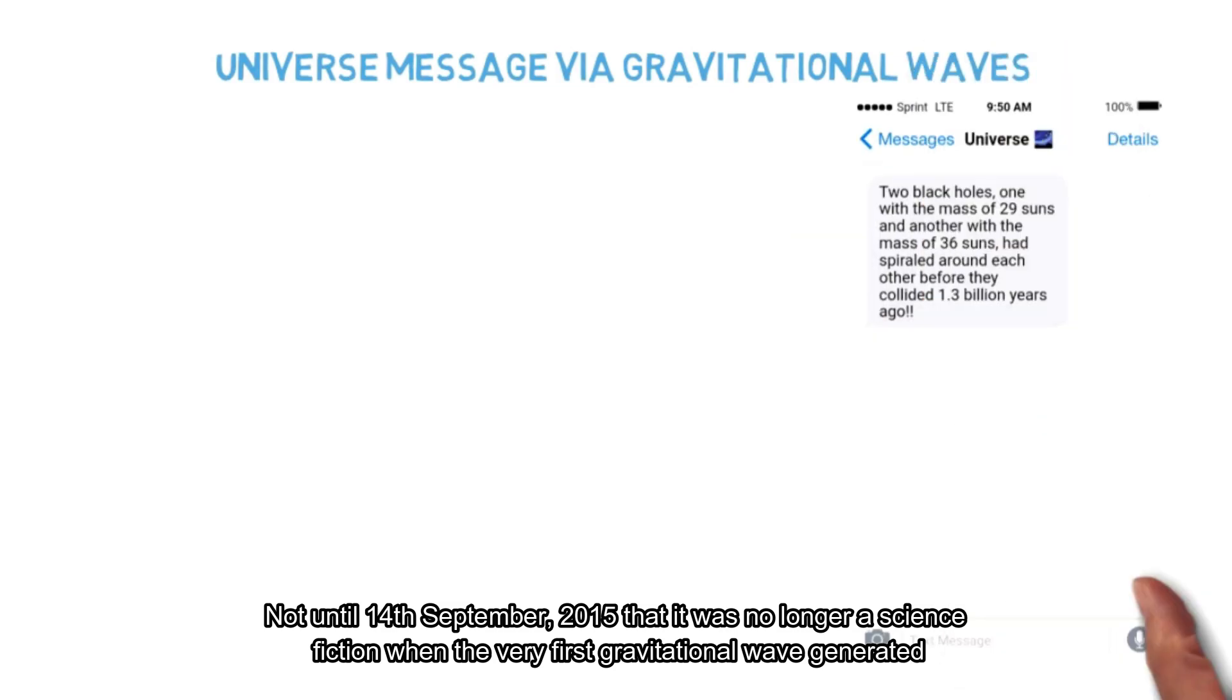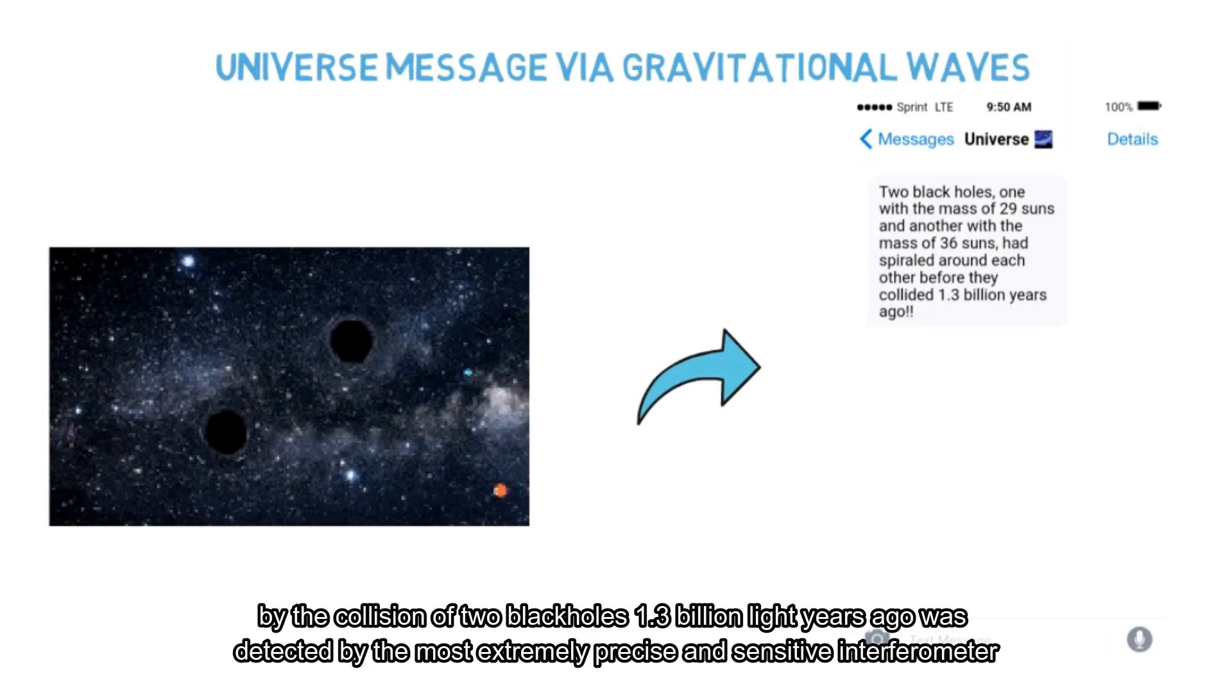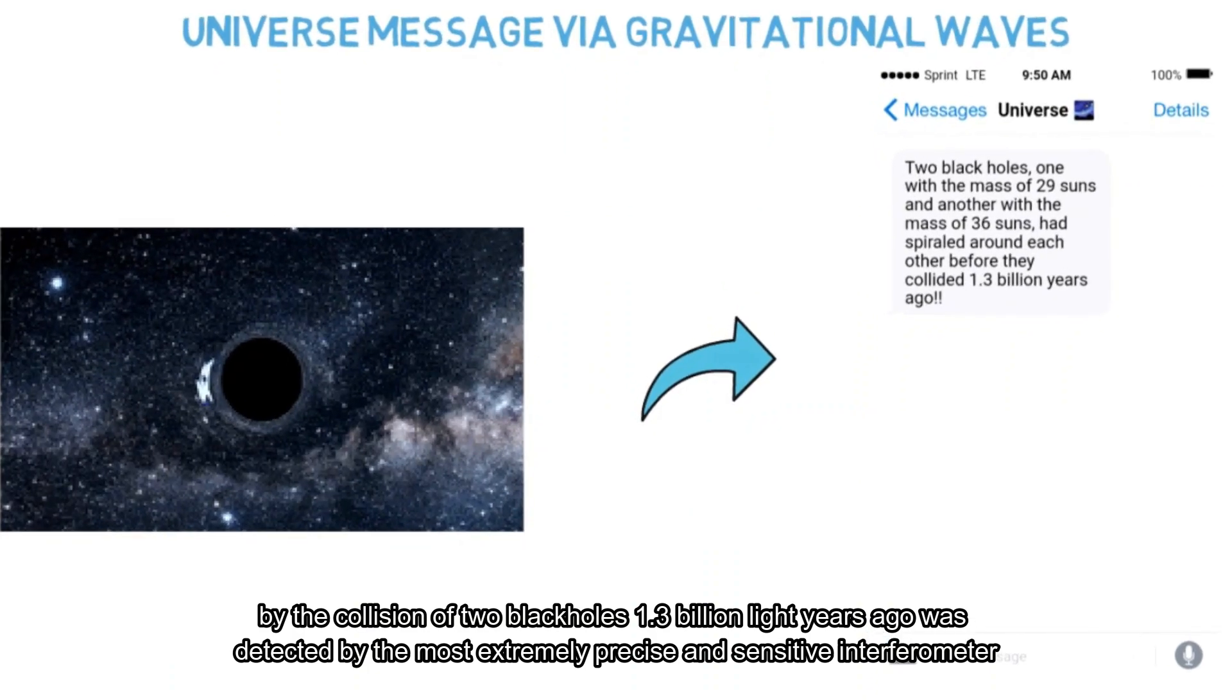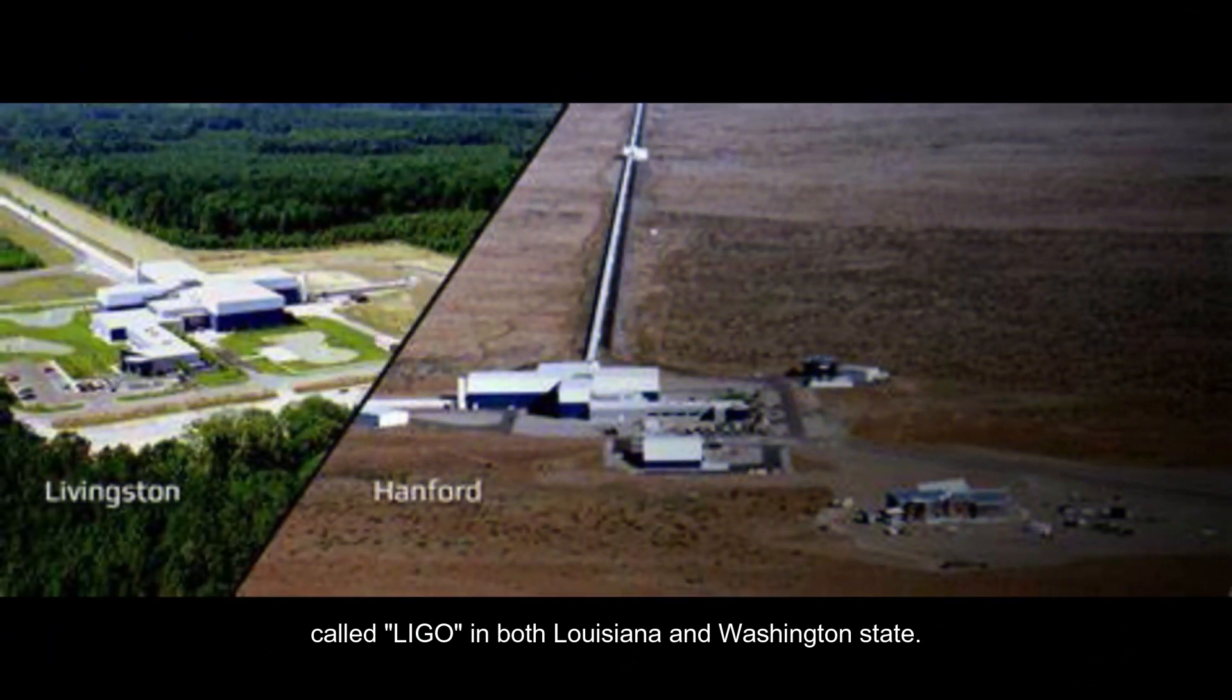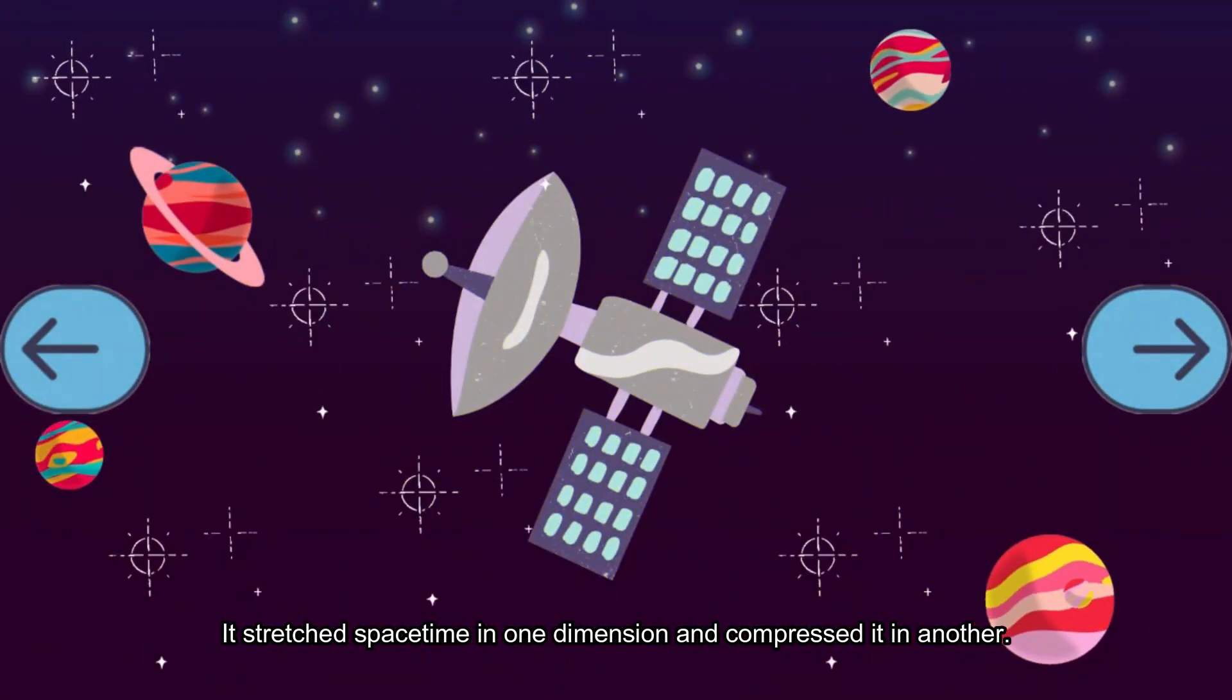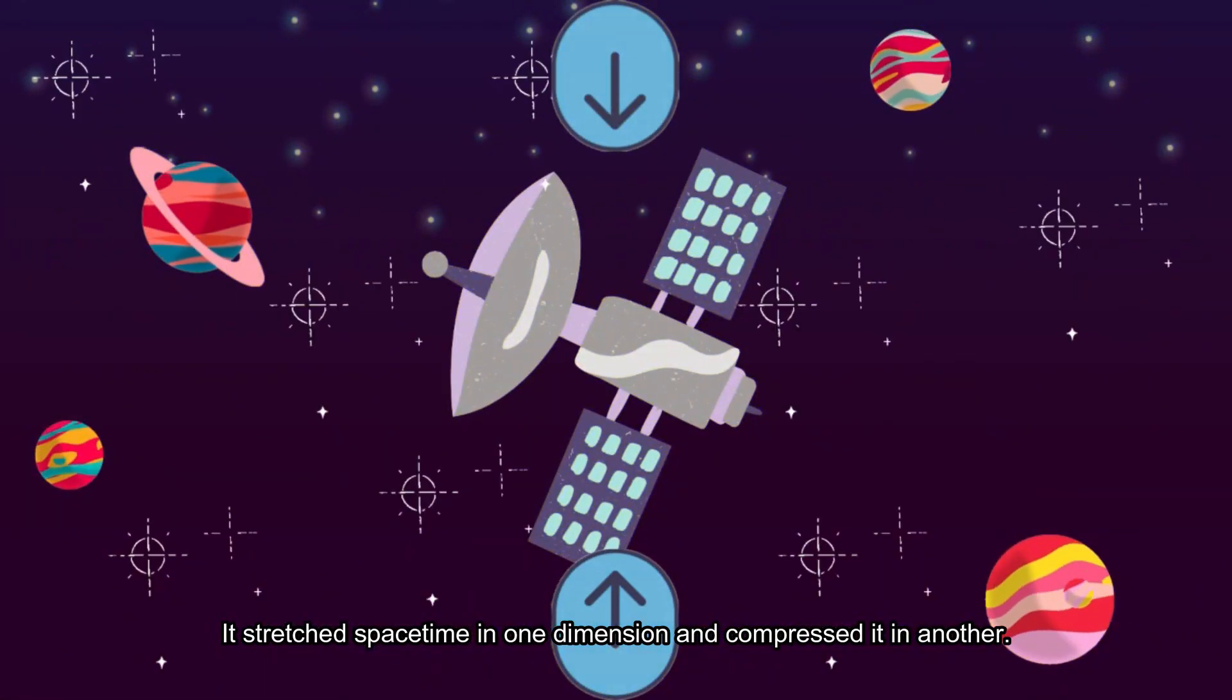The very first gravitational wave, generated by a collision of two black holes 1.3 billion light years ago, was detected by the extremely precise and sensitive interferometer LIGO in both Louisiana and Washington state. It stretched space-time in one dimension and compressed it in another.